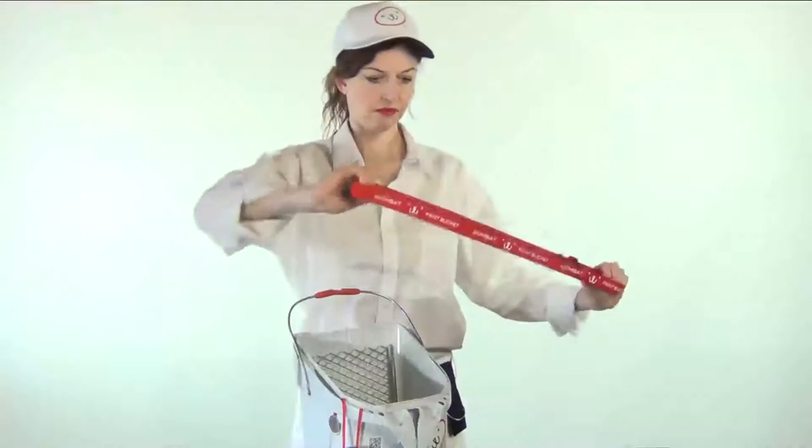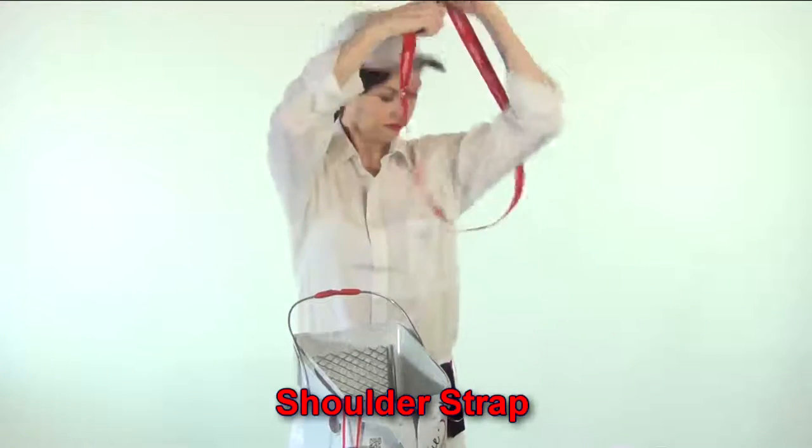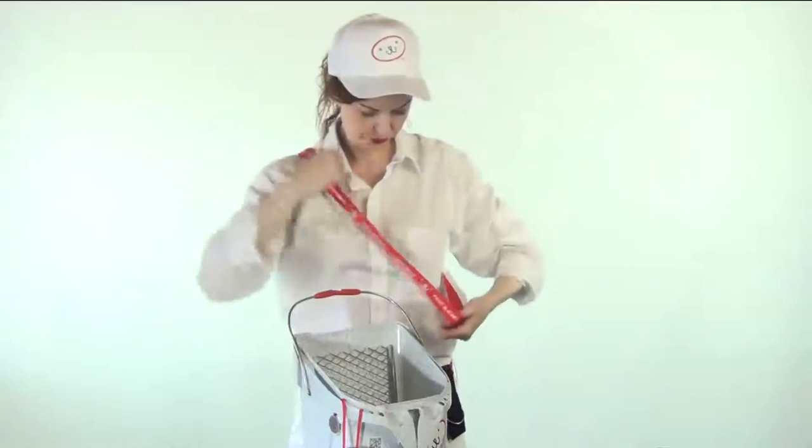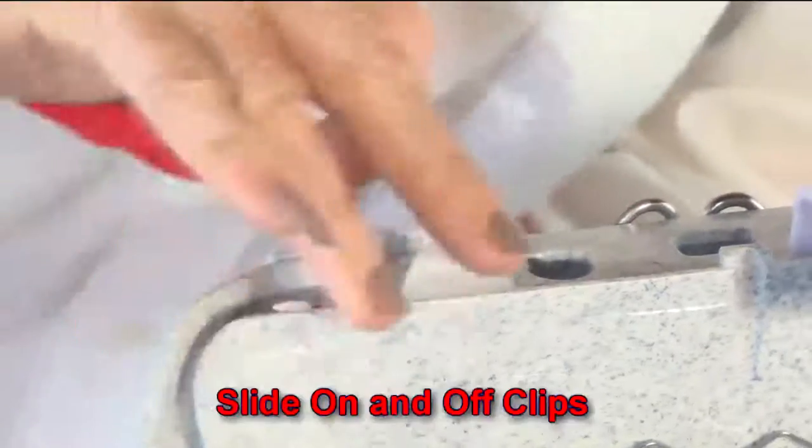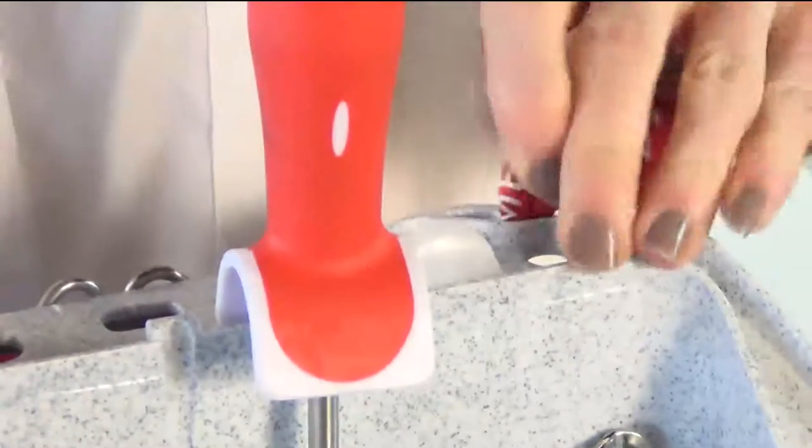The included shoulder strap is adjustable and slides into the clips on the back rim. Slip the Port-a-Paint on and off the strap and just leave the strap in place on your shoulder.